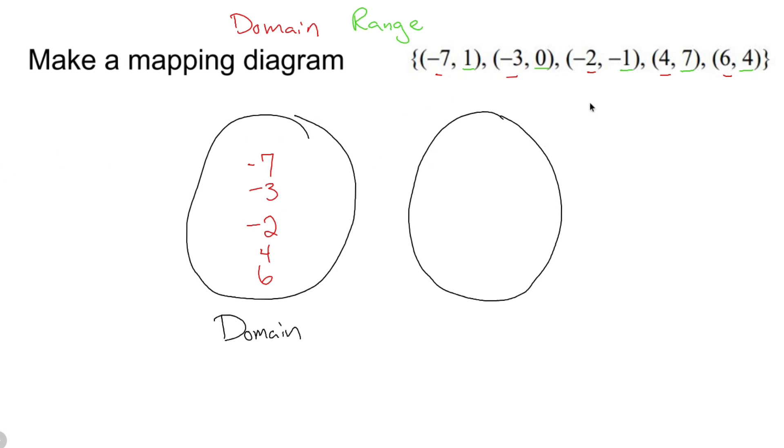Now in the second bubble, I'm going to write these out in order too. You notice they're not in order. One, zero, negative one, seven, and four are not in order. So my smallest number here is negative one, then zero, then regular one, then four, then seven.